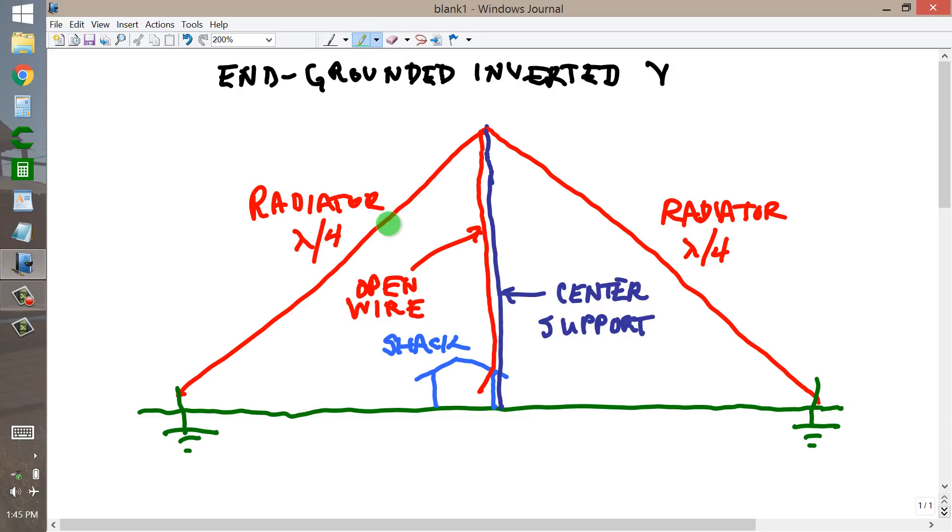It's just like an ordinary inverted V, fed with open wire, such as ladder line, to your shack.